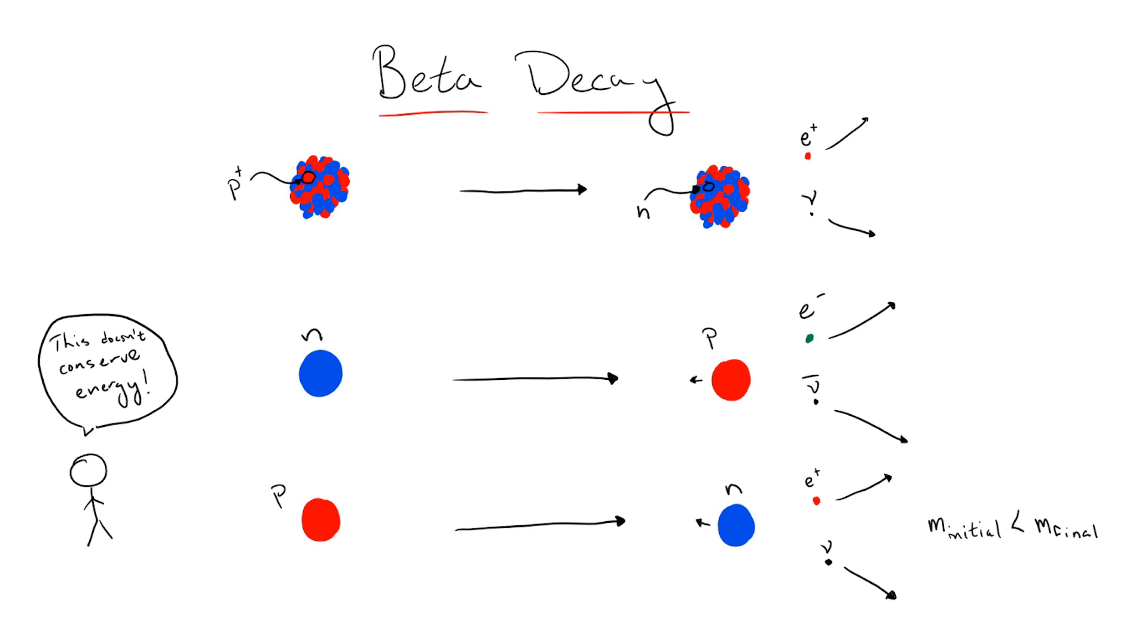Now, we also know that these nucleons are bound states of quarks, and so we can switch out the proton and neutron for an upquark and downquark respectively, to instead deal with the Fermi interactions only involving the fundamental particles in our theory.